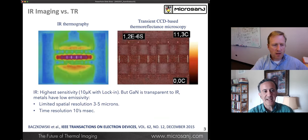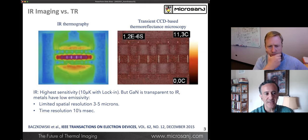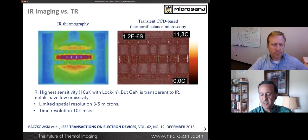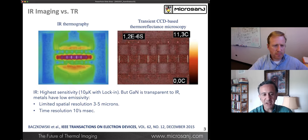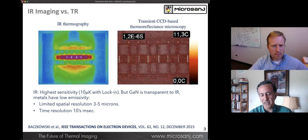Here is an example where IR thermography is compared with transient CCD. IR has the highest sensitivity, can go down to micro Kelvin with locking detection. But the real challenge is that gallium nitride is transparent to IR, metals have low emissivity. As a result, the temperature and time resolution is limited. When we look at CCD-based thermoreflectance, we are able to see heating in individual gate areas.